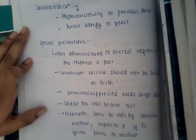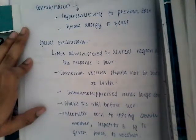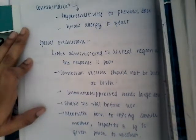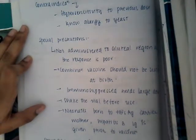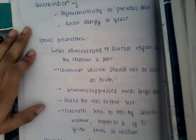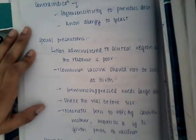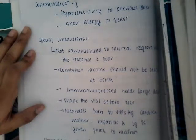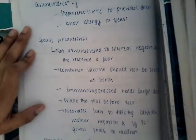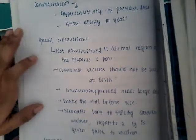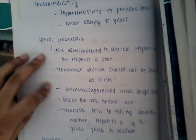Special precautions: it should not be administered in the gluteal region because the response to this vaccine in the gluteal region is very less. The combination vaccine should not be used at birth — always use only the Hepatitis B vaccine at birth and it should not be combined especially at birth.